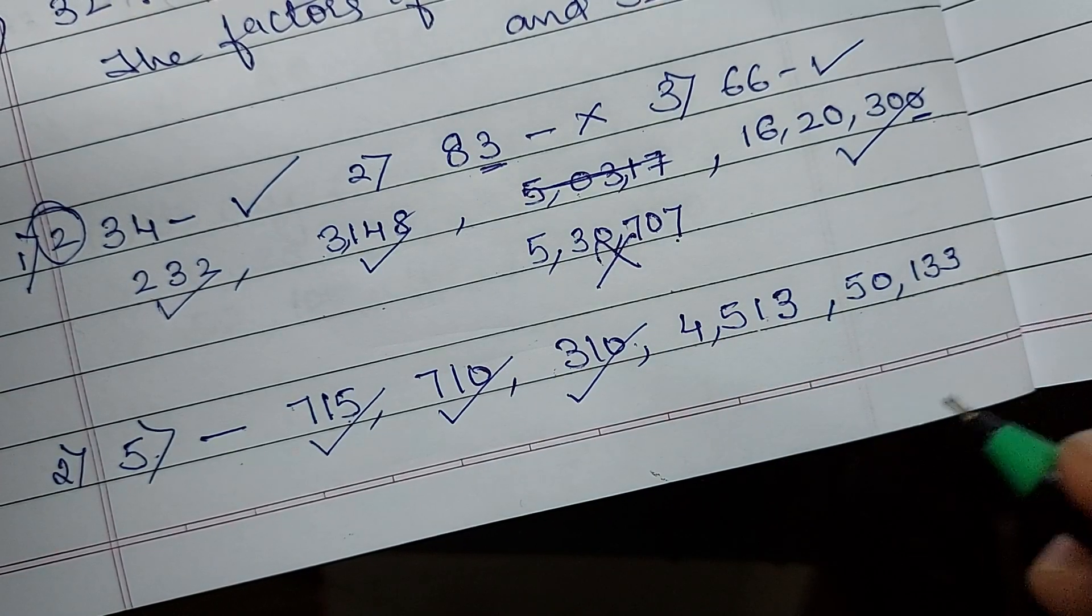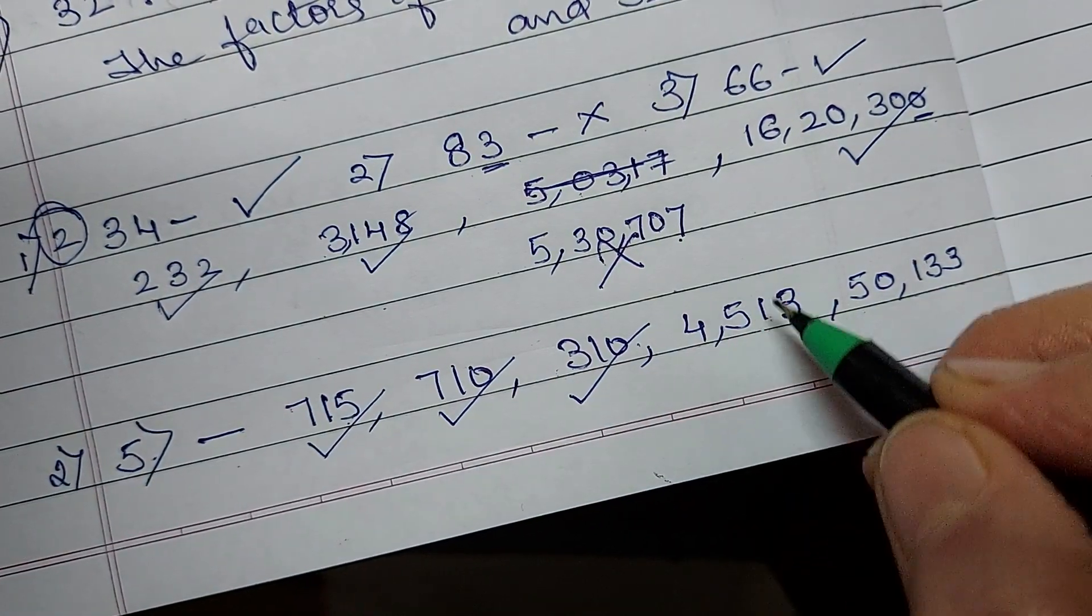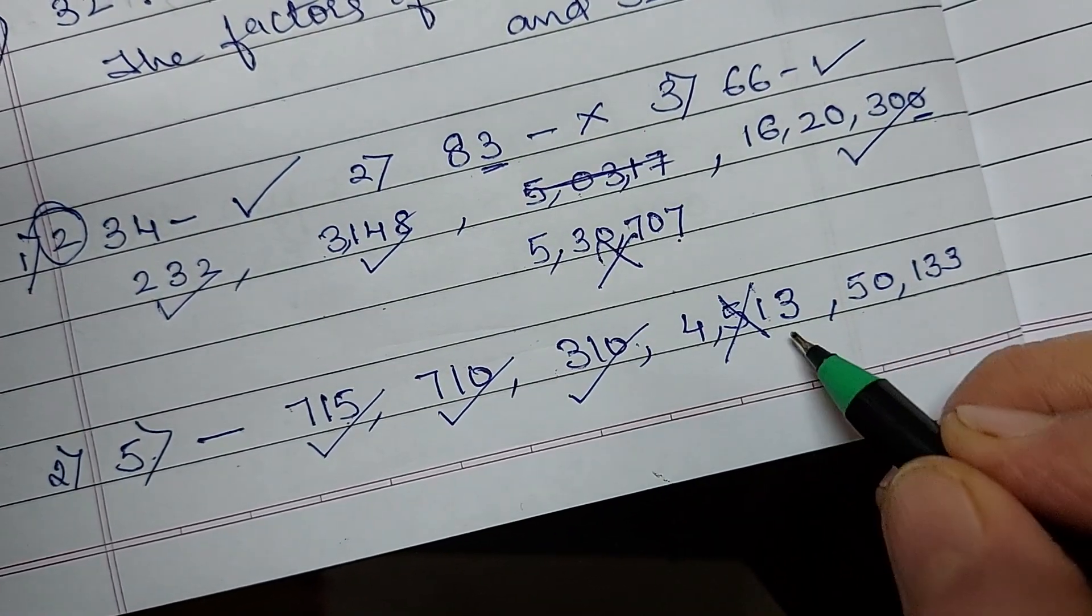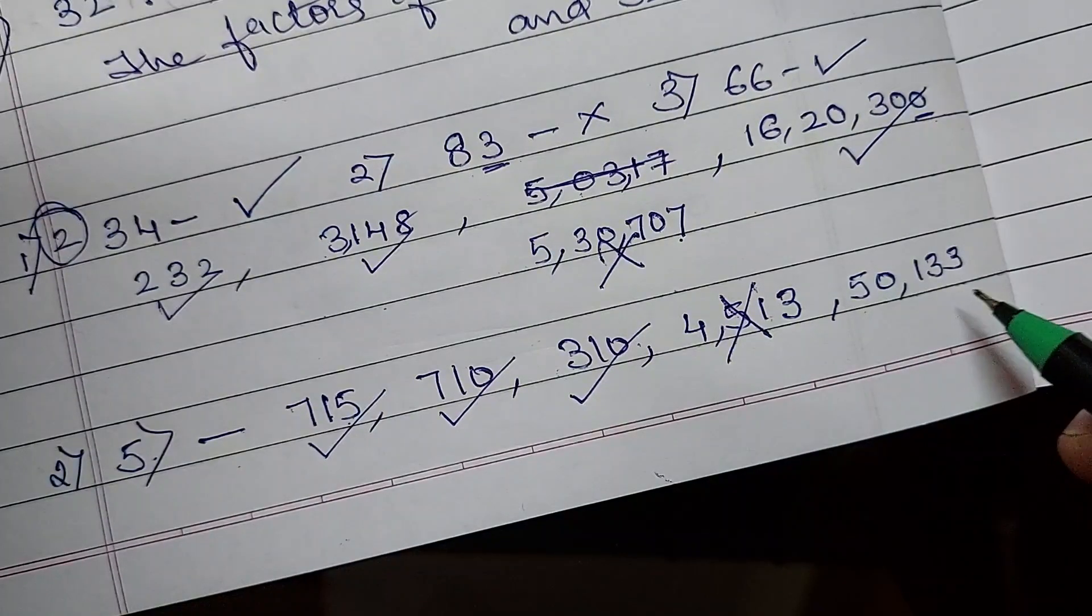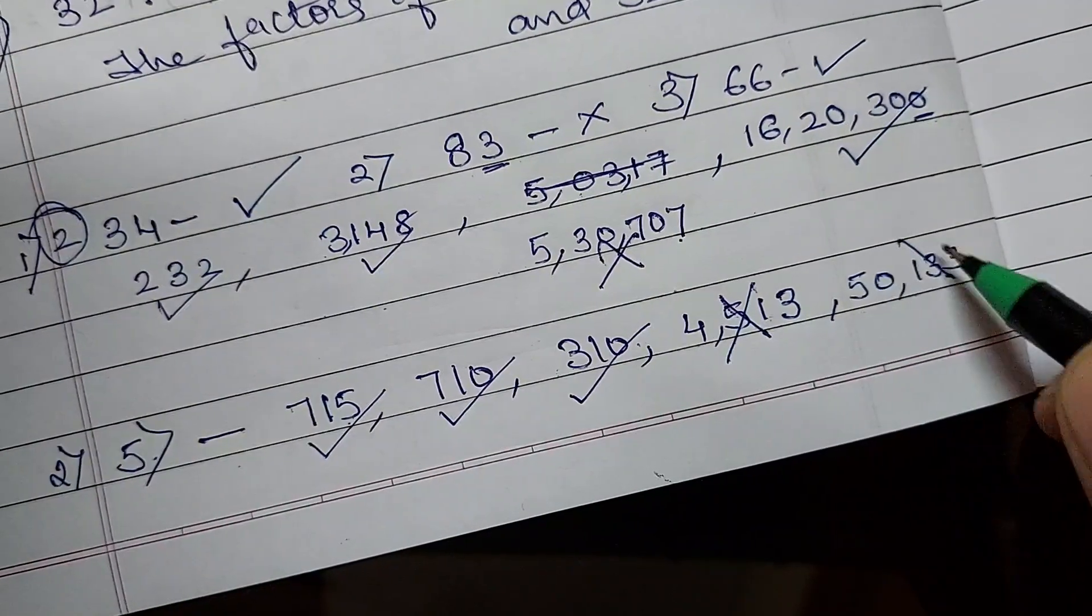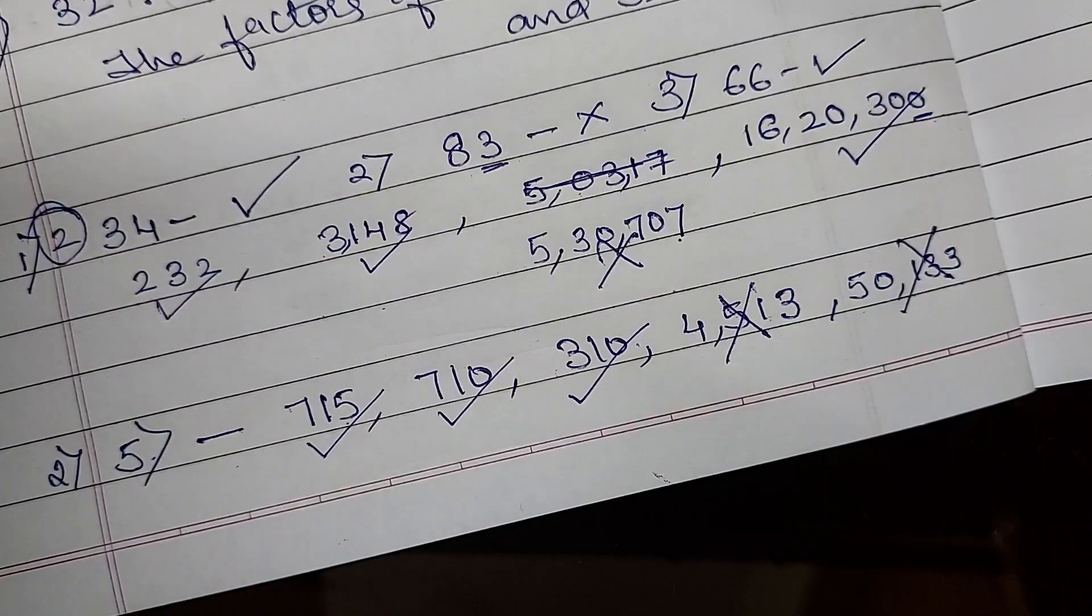310? Yes. 4513? No. Because there is 3 in the unit's place. 50133? Again, no. Got it children? So, this was divisibility check of 5.